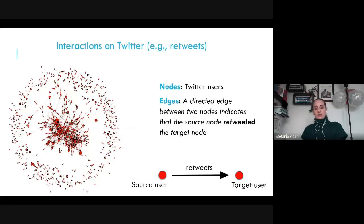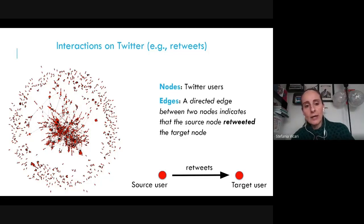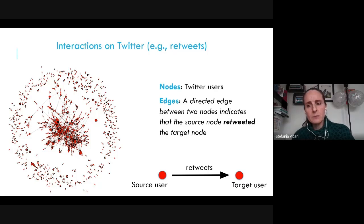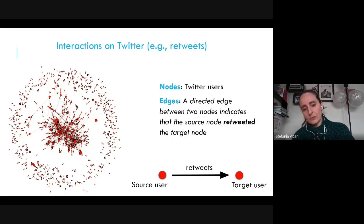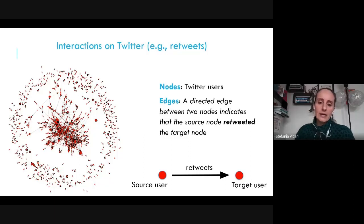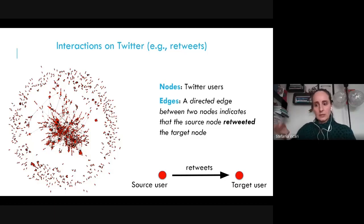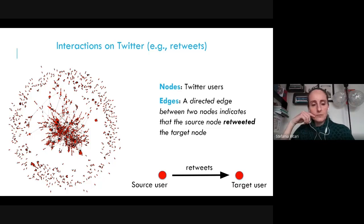We can also think of directed networks in the Twitter domain. This is a retweet network — a graph from a study of mine — that maps accounts retweeting other accounts. At the bottom of the slide you see a Twitter account retweeting other Twitter accounts, and overall the network shows the structure coming up from these retweeting dynamics.